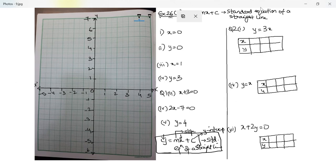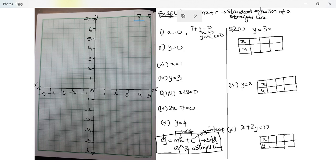Now if my straight line is x equal to zero, what is the value of y? It is independent of the value of y. So whatever be the value of y, x remains zero. If y is zero, x is zero. If y is five, x is still zero — the value of y does not change the value of x.